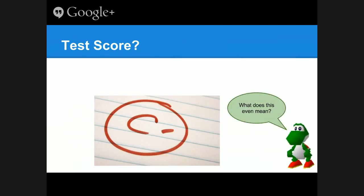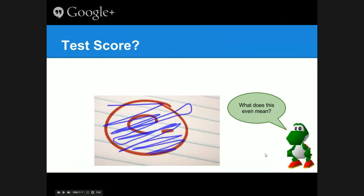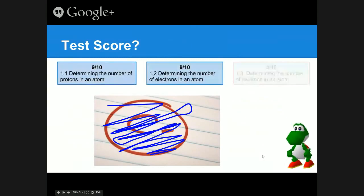A C- doesn't tell you much in terms of usefulness. So I like to cross out those scores and give you something better. Imagine instead of getting a C- on a test, you got three scores: 9 out of 10 in determining the number of protons in an atom, 9 out of 10 in determining the number of electrons, and 3 out of 10 in determining the number of neutrons.